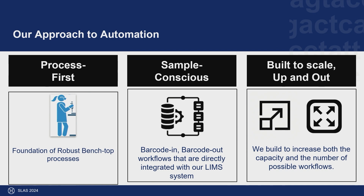Our automated processes are built to scale both up and out — when we build, we build not for the capacity we need right now, but for the capacity we need 18 months from now or more. When we build automation, we also think about what other assays are running that use the same or similar functions, so that the next time we need an integrated work cell, we don't have to start from scratch.